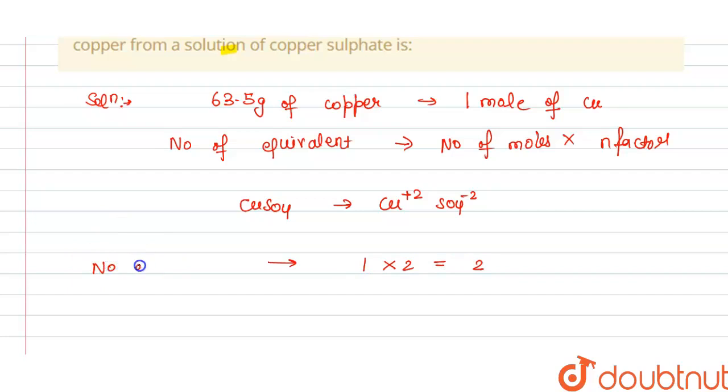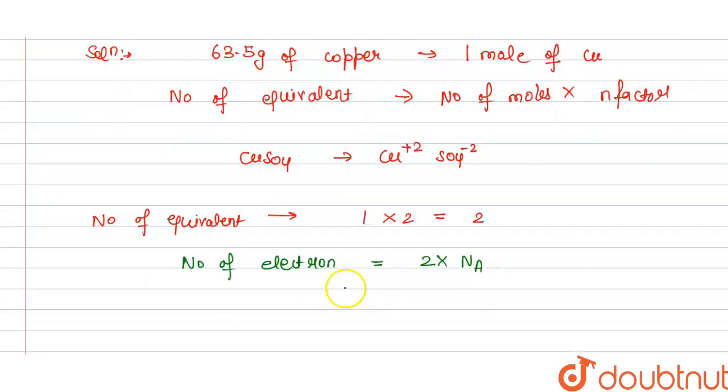So the number of equivalents is 2. And we know that the formula for finding number of electrons is number of equivalents, that is 2, multiplied by NA, that is Avogadro number. And we know that Avogadro number is equal to 6.022 into 10 power 23.